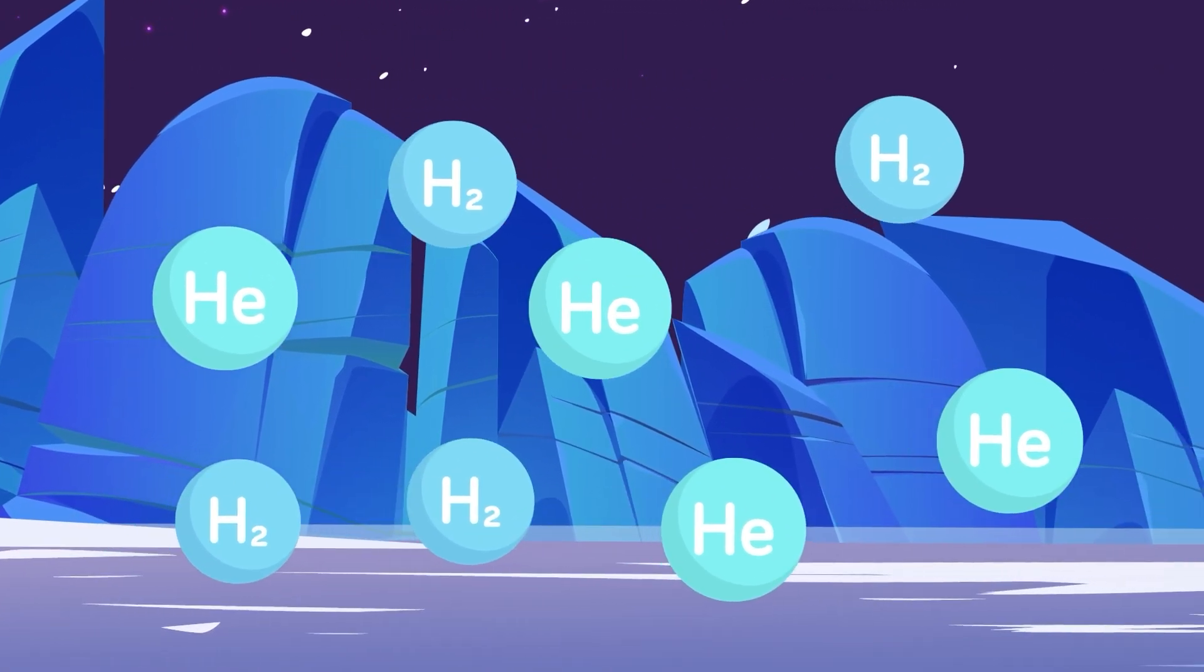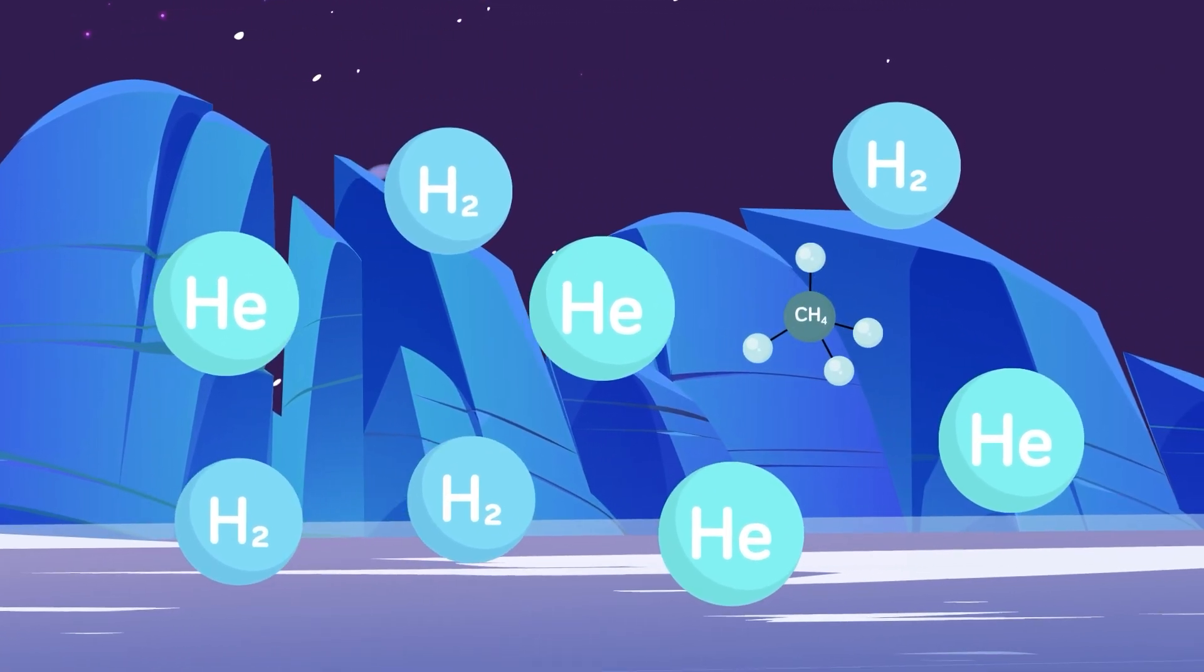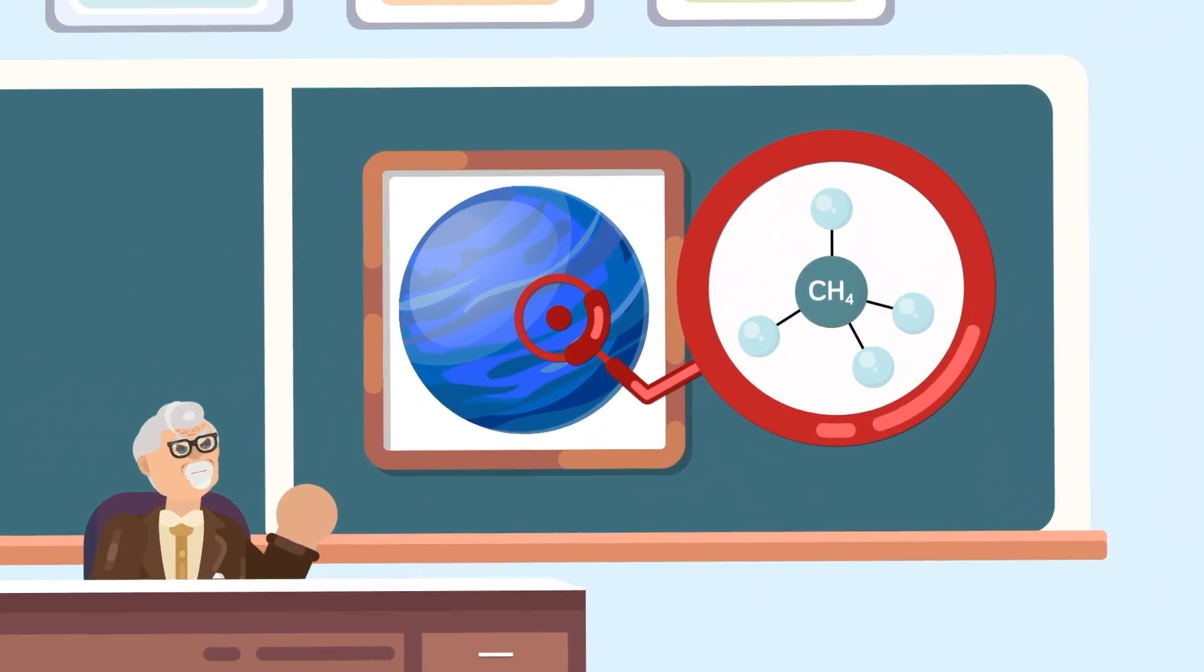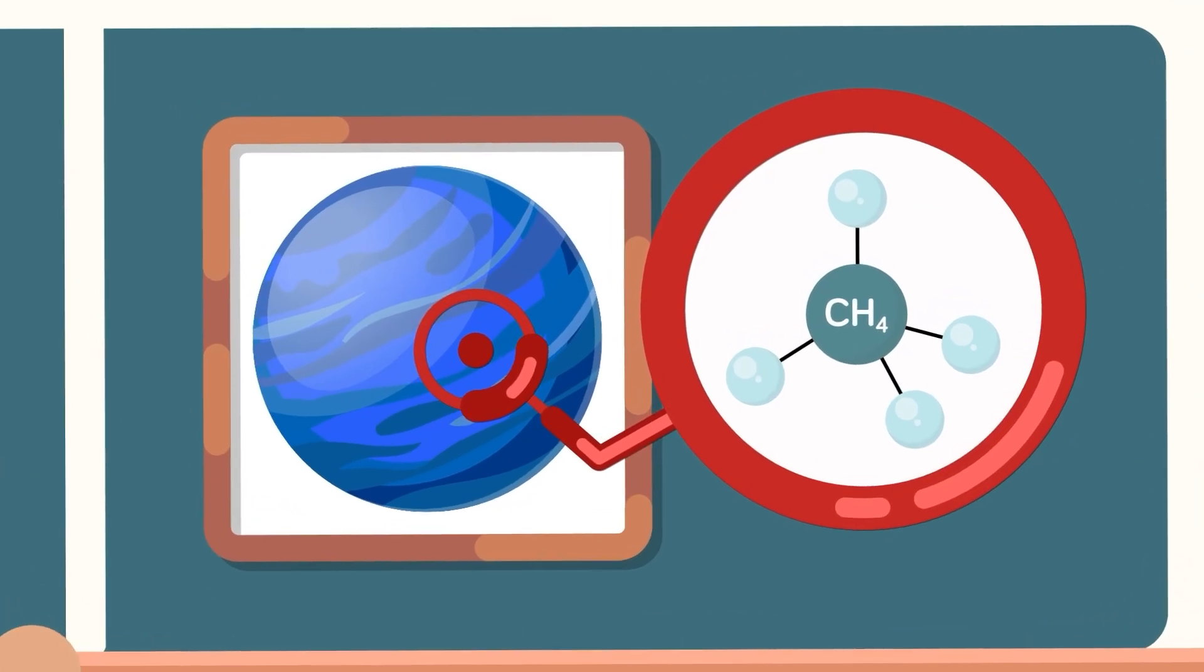Its atmosphere consists primarily of hydrogen and helium, with smaller amounts of methane in the mix too. In fact, it's the presence of this methane gas that gives Neptune its vivid blue appearance, fitting for such a cold, dark planet.